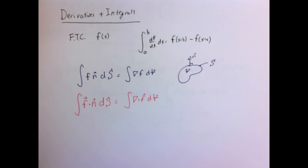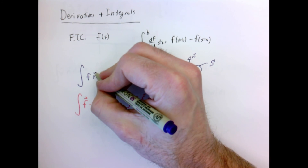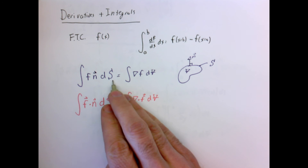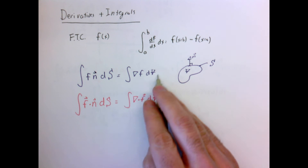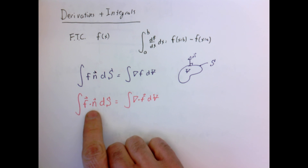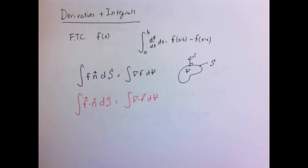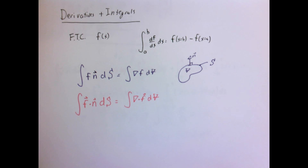In summary, two things to remember: if I have a scalar function multiplied by the normal vector and integrate over the surface, that equals the gradient integrated over the volume. And if I have a vector function dotted with the normal vector integrated over the surface, that equals the divergence integrated over the volume. Two very useful relationships used quite extensively in this course.